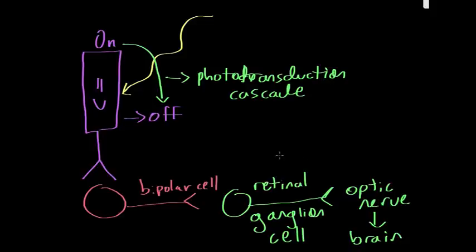So this is generally what happens when light hits the retina: it hits the rod, turns on a chain of cells, and the signal enters the brain. Your brain then makes sense of what's happening by creating a rich visual field, which we can enjoy every single day.